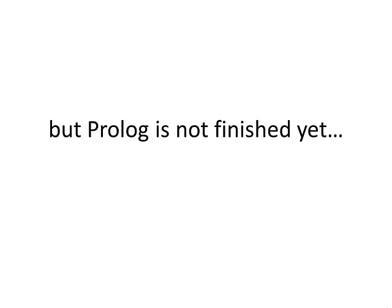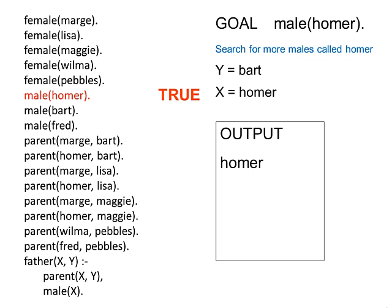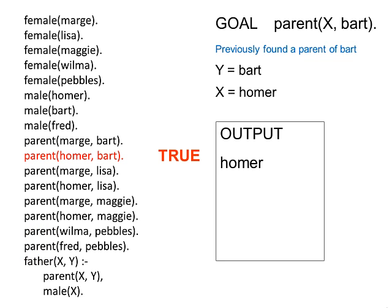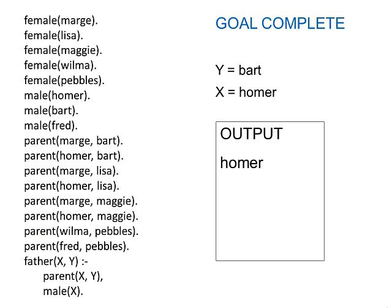But Prolog isn't finished yet. As far as Prolog is concerned, there might be another male called Homer, so it keeps searching. And of course there isn't one. And Prolog now backtracks to the last successful match. Because as far as Prolog is concerned, Bart might have more than two parents. So it continues searching again. Now the goal is complete.